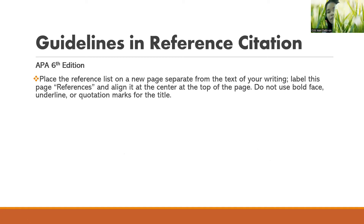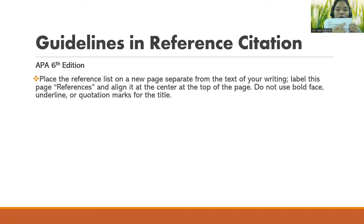For example, if this is your research paper and chapter 2 ends in the middle of a page, do not put the reference list in the remaining space below. The reference list goes on a new separate page. Label this page 'References' and align it at the top center of the page — not left or right margin, center it. Do not use bold face, underline, or quotation marks for the title.